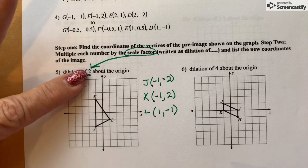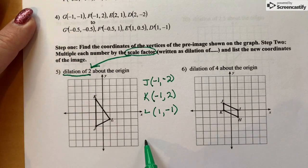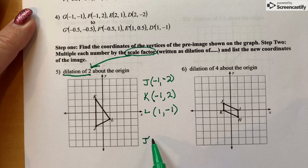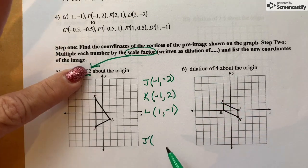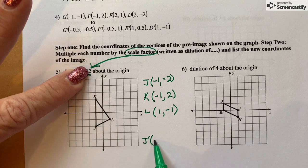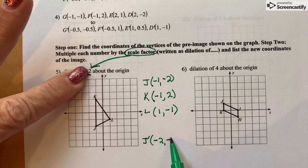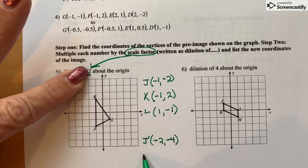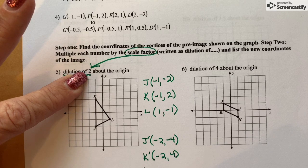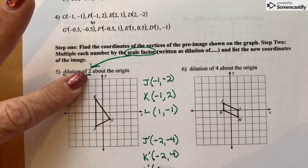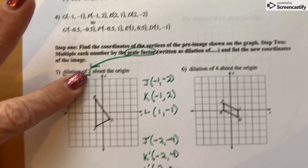Now we're going to apply the scale factor. So multiplying all of the coordinates of J by this number 2, so I'll get negative 2, negative 4. K prime is negative 2, positive 4. And L prime is 1 times 2 and negative 1 times 2, which is 2, negative 2.